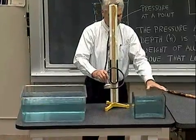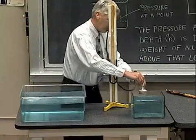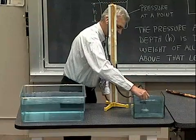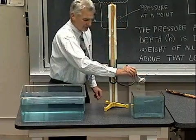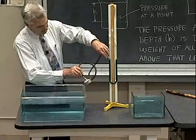Notice that the cross-sectional areas are very much different from one another. I go to a certain depth here, say 6 inches deep in that particular tank, and I get a certain pressure difference read on the U-tube.